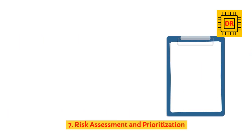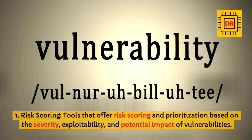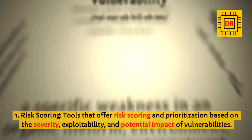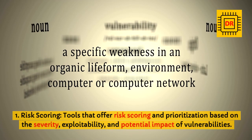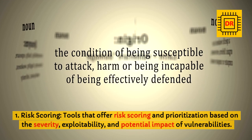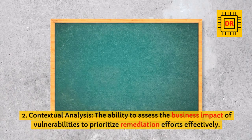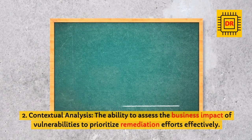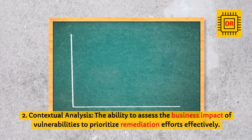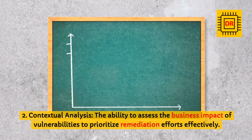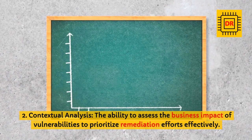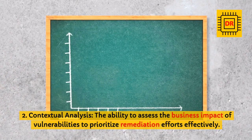7. Risk Assessment and Prioritization. Risk Scoring: Tools that offer risk scoring and prioritization based on the severity, exploitability, and potential impact of vulnerabilities. Contextual Analysis: The ability to assess the business impact of vulnerabilities to prioritize remediation efforts effectively.